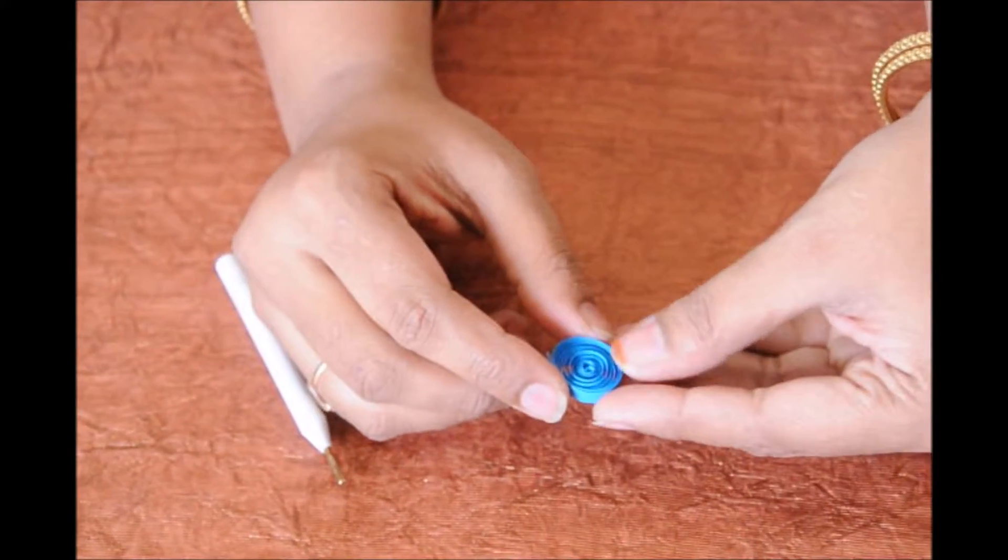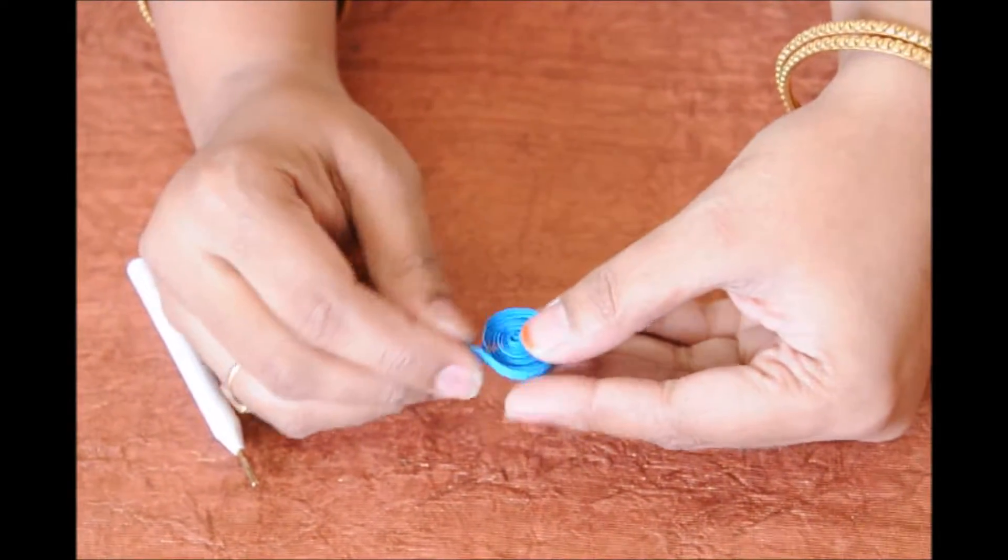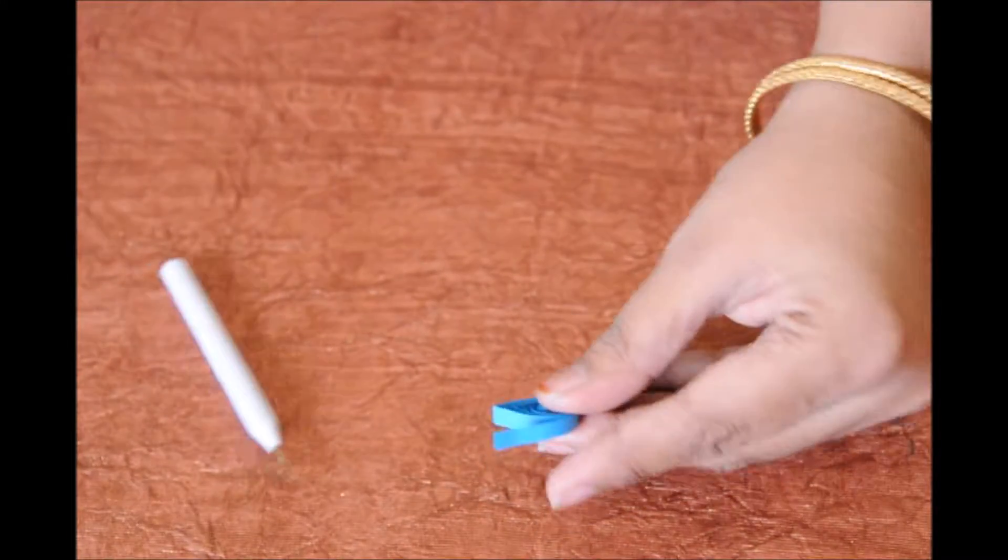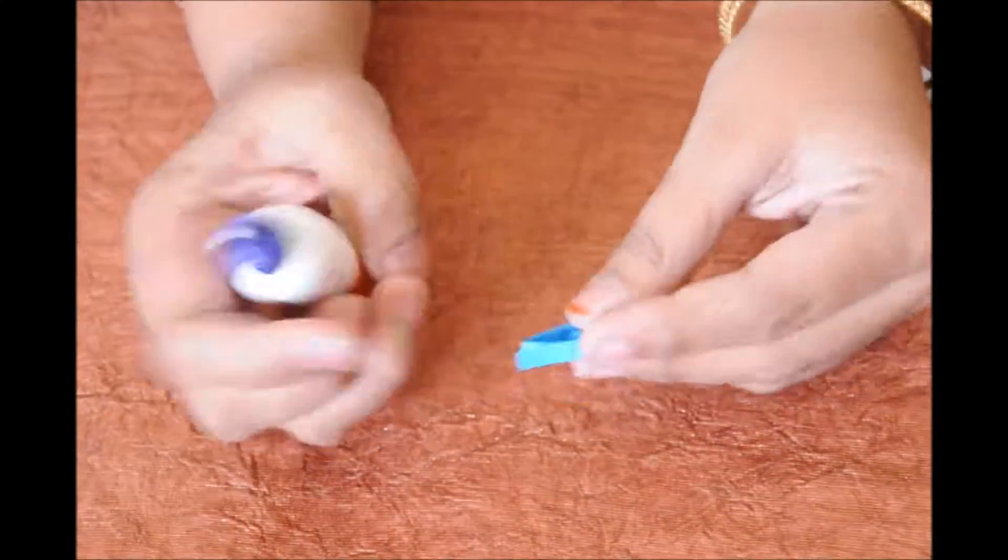Now loosen it and then mould it into a drop shape by pressing on one side. This is going to be my center piece. I am gluing it at the end.